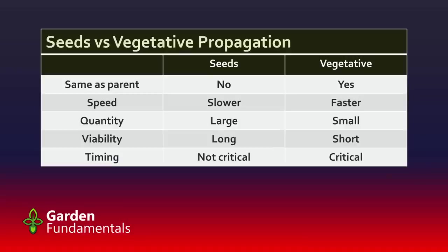The advantage of seeds is that I can do a large number — I can do 100 acres of corn propagated from seeds, but creating 100 acres of corn from vegetative sources is much more difficult. Seeds also tend to be viable for a very long period of time and can be stored at low temperatures for hundreds of years. You can't do that with vegetative material — most of it has to be collected and processed right away. Seeds can be done at any time of year, but vegetative propagation has to be done at a certain time, which can be quite critical depending on the plant.